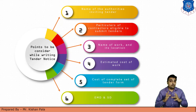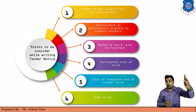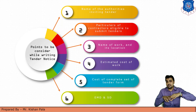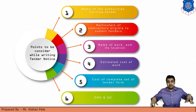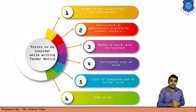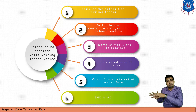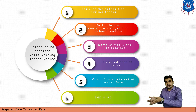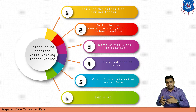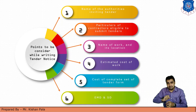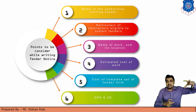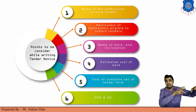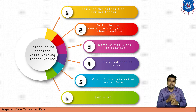The first point is the name of the authorized body inviting the tender. For example, if you are a client offering a particular offer, there should be mentioned the client's details — for example, a government body like the road and building department, irrigation department, public works department, or central public works department. If a private agency is offering this type of contract, the private agency's name and details should be mentioned.